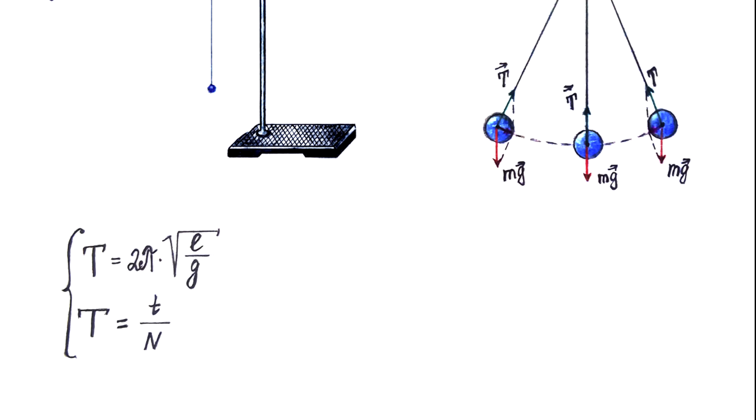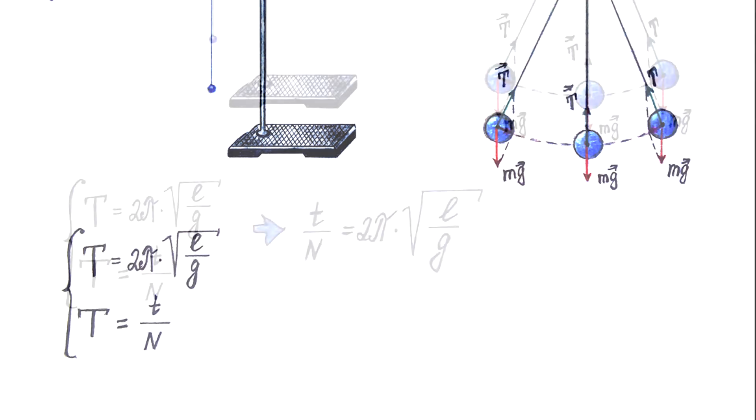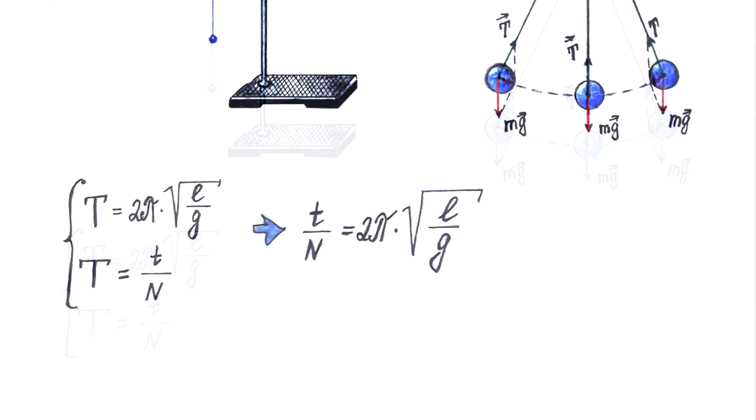Let's write down the period formula and try to solve the system of equations. If the left parts of the system of equations are equal, then the right parts of the system are equal. We need to square both parts of the equation to get rid of the square root.